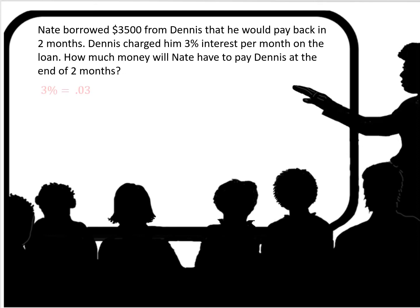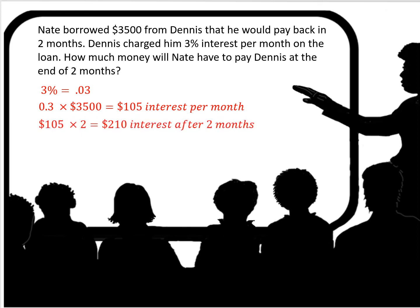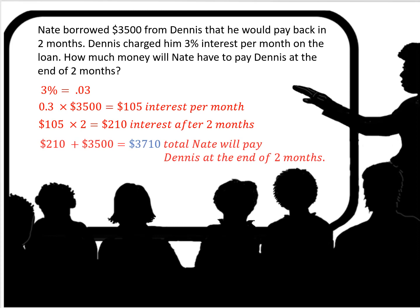Nate borrowed $3,500 from Dennis that he would pay back in two months. Dennis charges him 3% interest per month on the loan. How much money will Nate have to pay Dennis at the end of two months? 3% in decimal form is 0.03. You take 3% of $3,500, which is $105 interest per month. Multiply that by two for the two months — that's $210 in interest. Add the interest of $210 to the original loan amount of $3,500 and you get a total of $3,710. This is a simple interest problem.